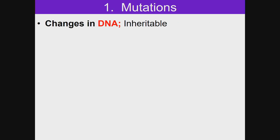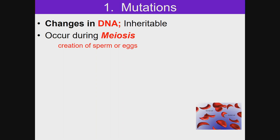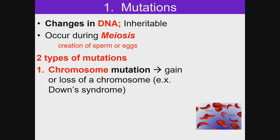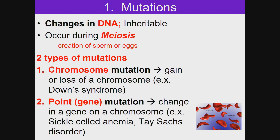Mutations are changes in DNA. They are inheritable and occur during meiosis — the creation of sperm or eggs. There are two types of mutations: chromosome mutation, which is a gain or loss of a chromosome; and a point or gene mutation, which is a change in a gene on a chromosome that causes conditions like sickle cell anemia and Tay-Sachs disorder.